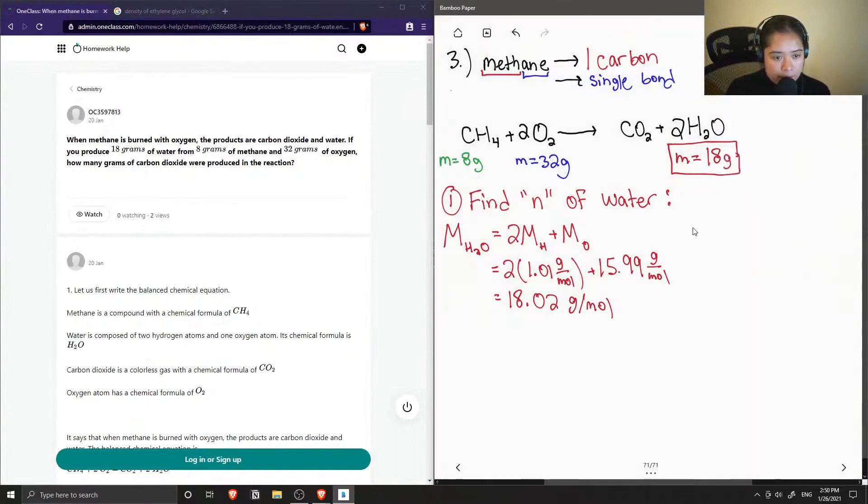So now to find the number of moles, it's just going to be the mass over molar mass. So the mass of water is given in the question, 18 grams. The molar mass is what we just found to be 18.02 grams per mole. And now if we divide this, we get the number of moles of water equal to around 0.999 moles.